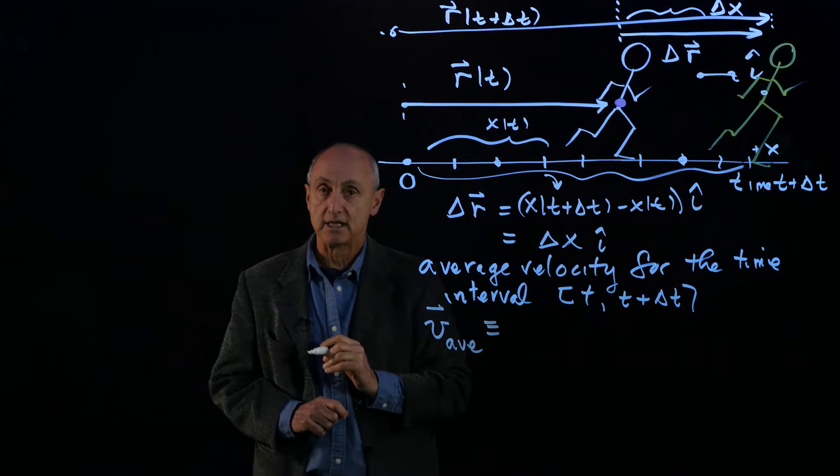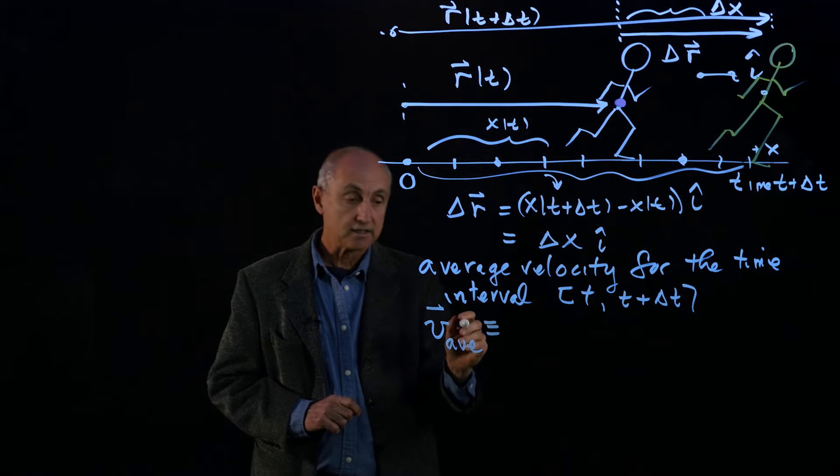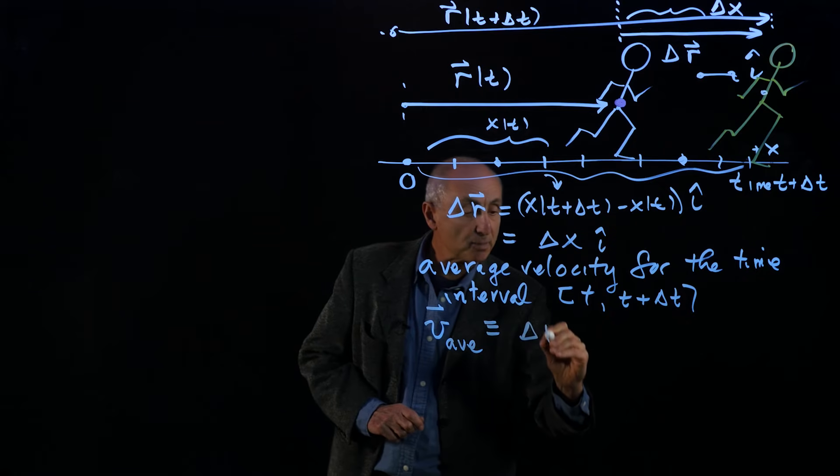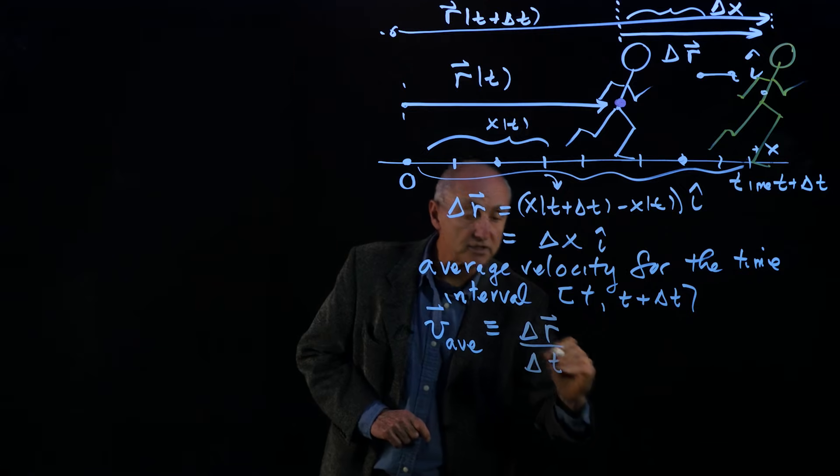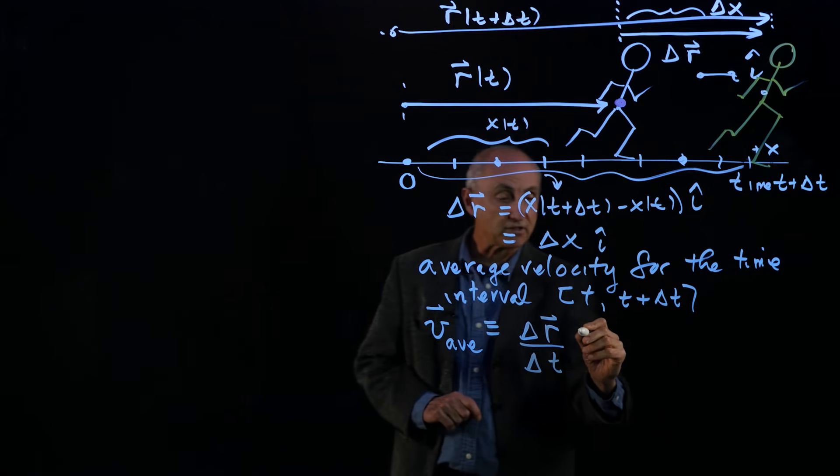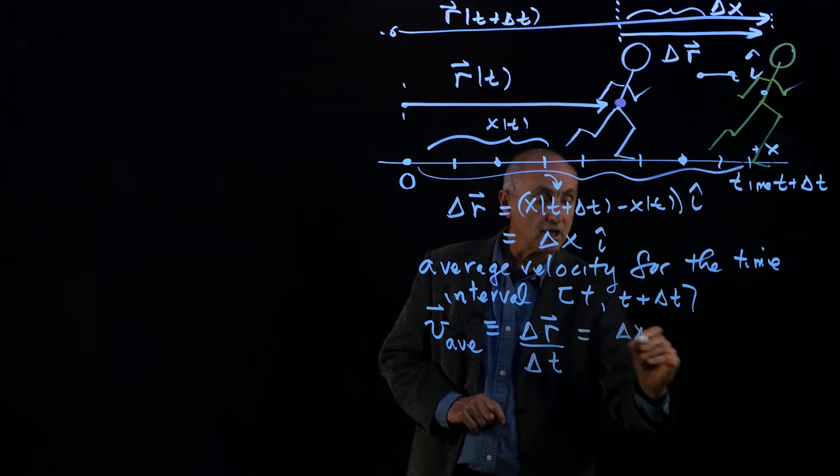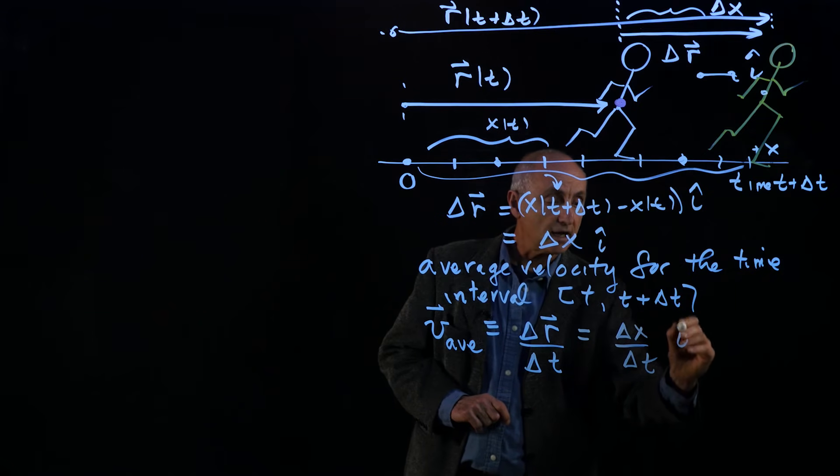We'll use three bars to indicate a definition. It is the displacement during a time interval delta t. So as a vector, we have delta x over delta t i hat.